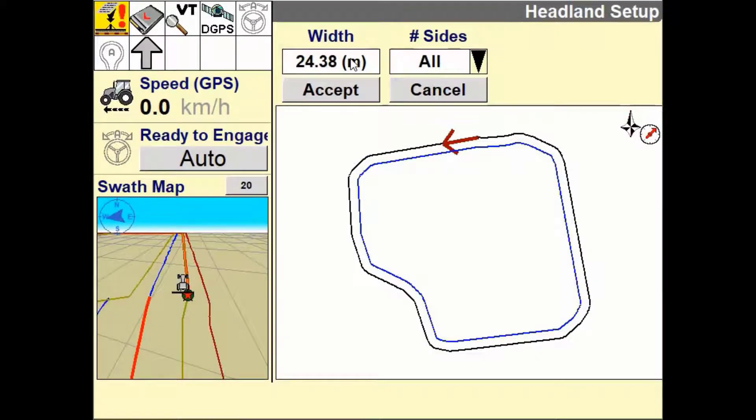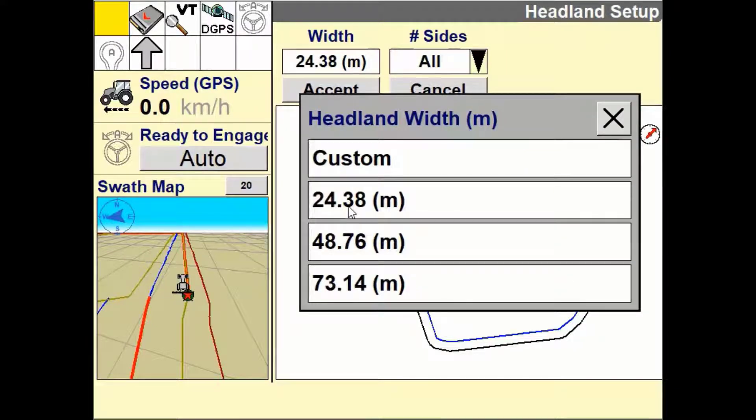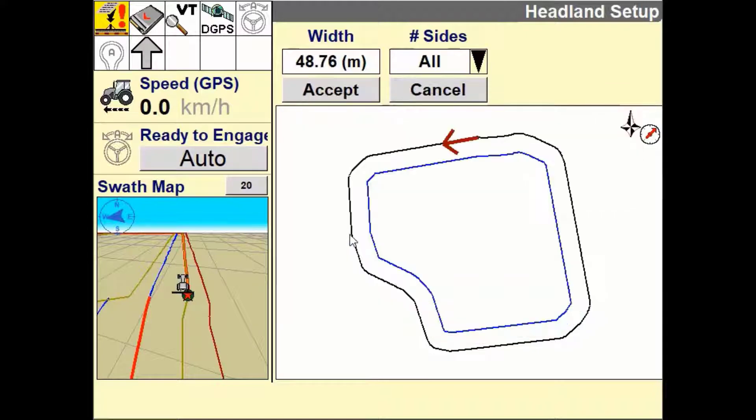A field headland is a defined boundary within a field based off the outer boundary. This inner boundary can be one end of the field or both ends of the field or follow the field boundary for its entirety.